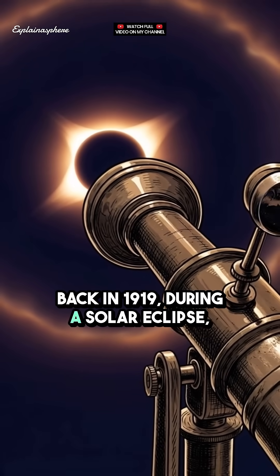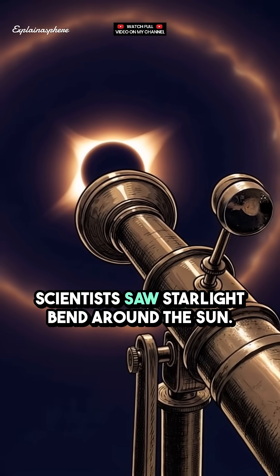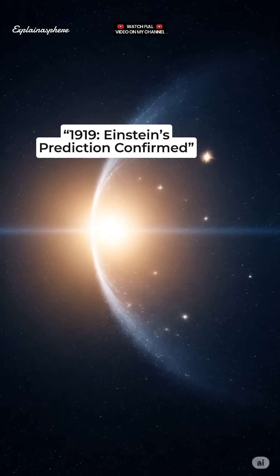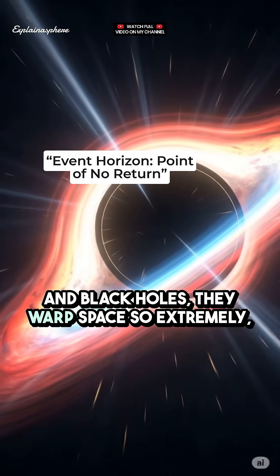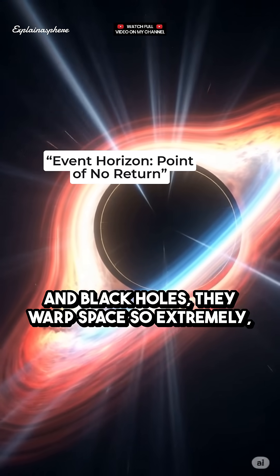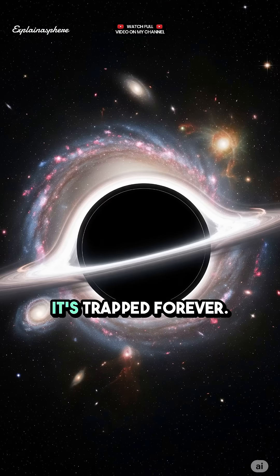Back in 1919, during a solar eclipse, scientists saw starlight bend around the sun. Einstein? Proven right. And black holes? They warp space so extremely, light doesn't escape. It's trapped forever.